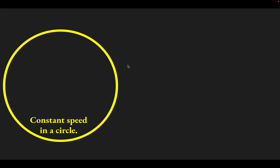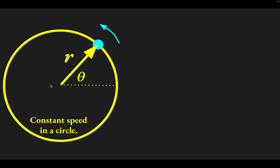To keep things simple, we'll start with just moving at constant speed in a circle. So let's say we have an object here, moving this way at constant speed. What we can do is locate this object with what's called a position vector — we'll place the origin at the center of the circle, and this vector locates the object, tipped up from the x-axis by some angle called theta.